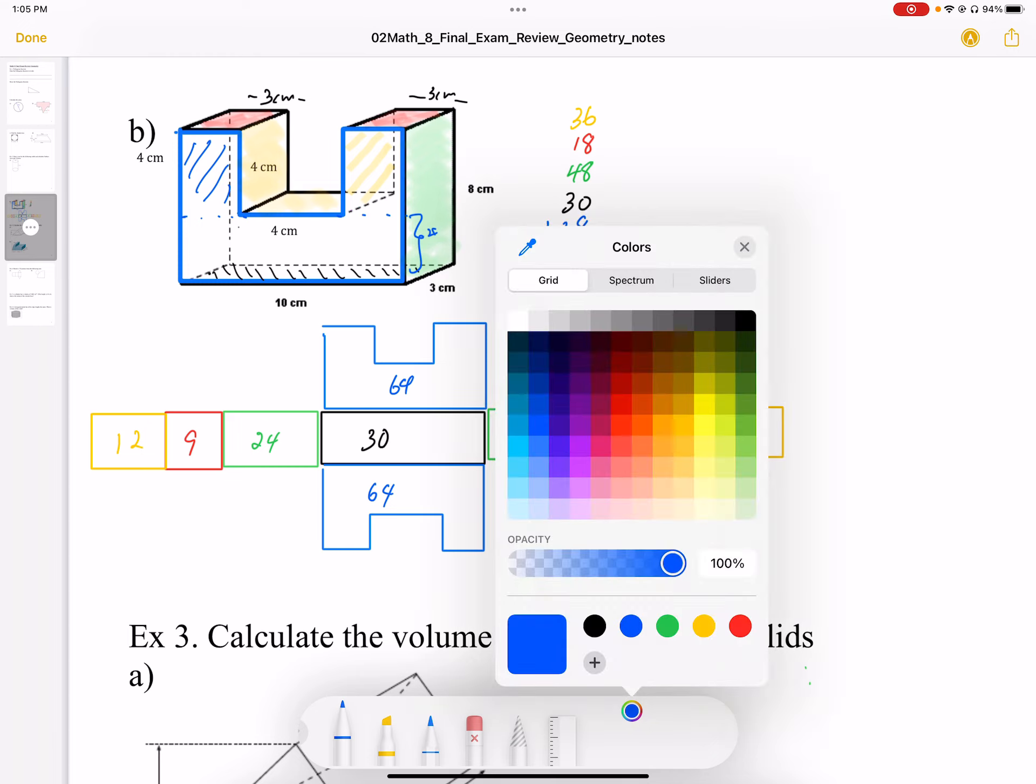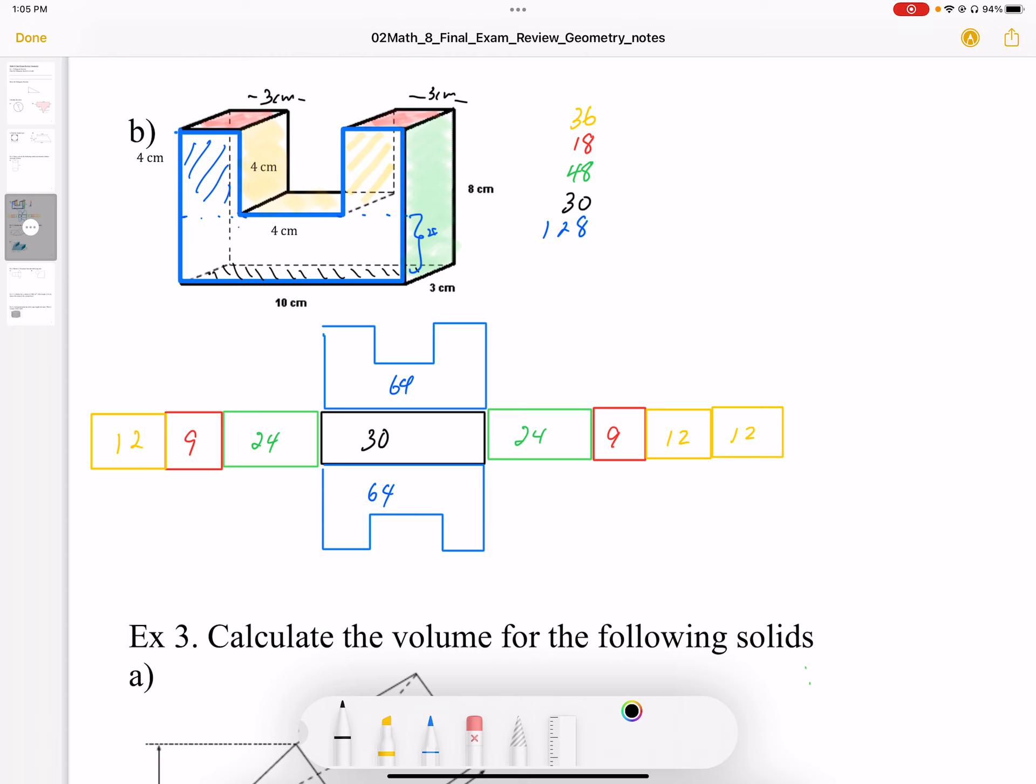And adding that all up, that area works out to be 260 centimeters squared represents the surface area. So there is my surface area. It equals 260 centimeters squared.